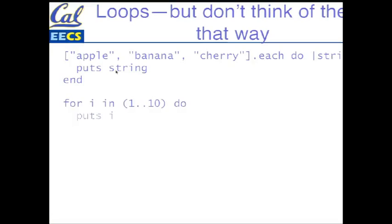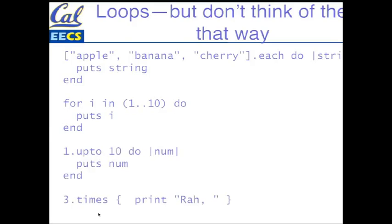That looks pretty innocuous. I've seen for loops before — that looks like a range of numbers, and the variable is available inside the loop. This one's a little more interesting: one up to ten. That's pretty cute, and then inside the loop, I can get the value of it as num. And here's another one — I can print 'rah rah rah' three dot times.